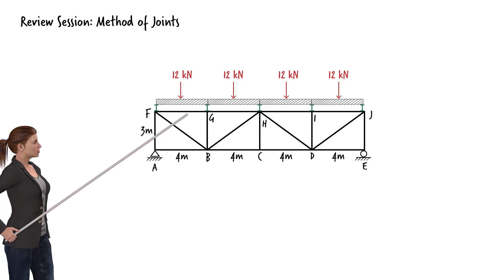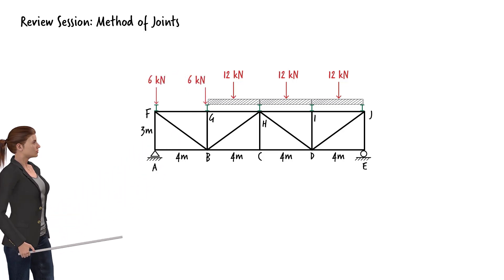For panel FG, we get 6 kN at each end. For GH, the load is distributed this way. The load distribution for the other two panels can be done in a similar manner.